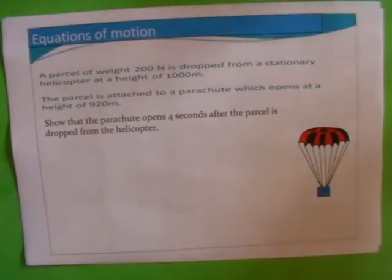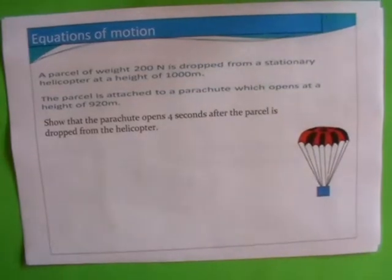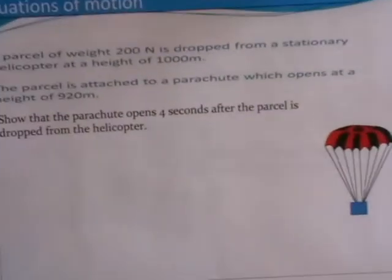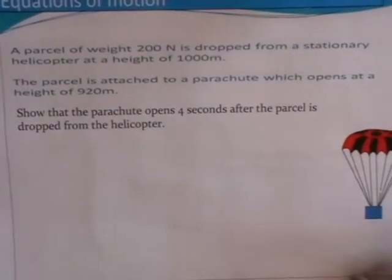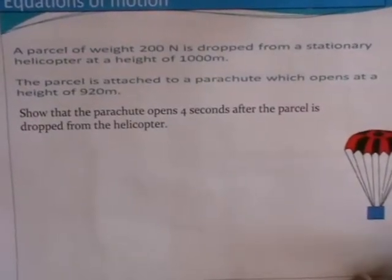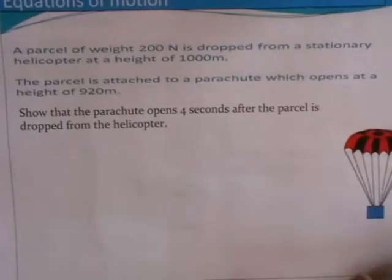Another question. A parcel of weight 200 newtons is dropped from a stationary helicopter at a height of 1000 meters. The parcel is attached to a parachute which opens at a height of 920 meters. Show that the parachute opens 4 seconds after the parcel is dropped from the helicopter.